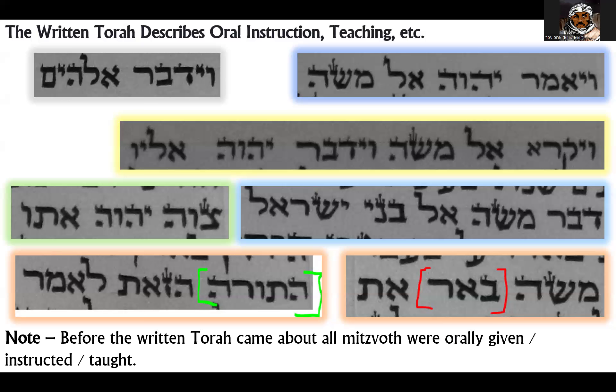Before the written Torah came about, all mitzvot that were given were orally given, instructed, and taught. Because again, the word Torah does not mean written text — the word Torah means instruction. It just so happens that there's a written Torah. And before the written Torah, there was oral instruction.